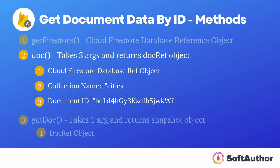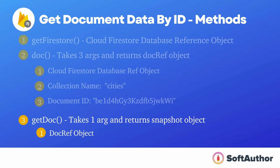The second method is the doc method. This method takes three arguments: the first is a Cloud Firestore database reference object, the second is the collection name we want to get a document from, and the third is the document ID we want the data of. The doc method returns a document reference object. Finally, the third method is getDoc, which takes a single argument — a document reference object — and returns a snapshot object that will have the actual data.